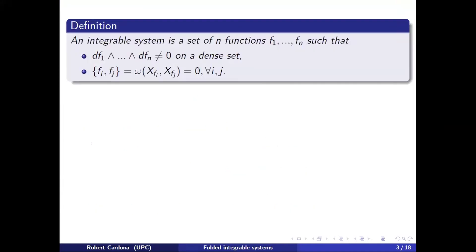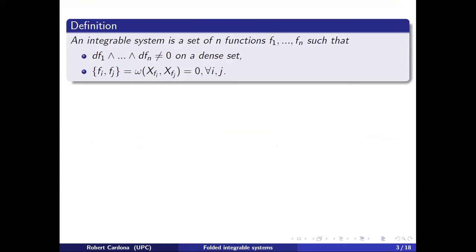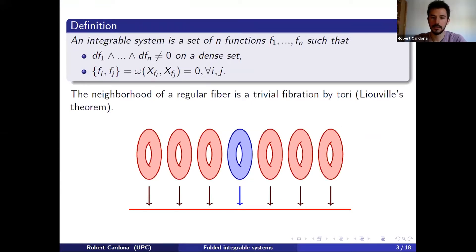An integrable system — we have been speaking about it in this conference — is just a set of n functions which are functionally independent on a dense set of your manifold and which Poisson-commute. The classical theorem is that near a regular fiber, you have a torus fiber fibration and each regular level set is just a torus.